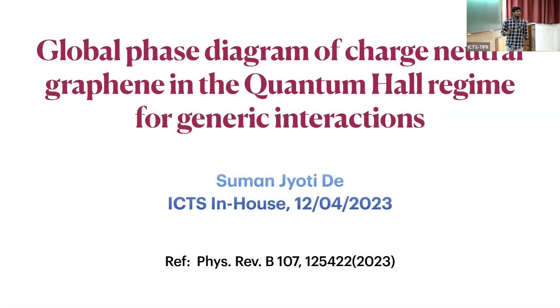Hello everyone. Today I will be talking about the global phase diagram of charge neutral graphene in the quantum Hall regime for generic interactions. There are some jargons involved here but hopefully it will get clear as I go along. If you are interested in details of this talk, you can look at this article which has been published very recently.